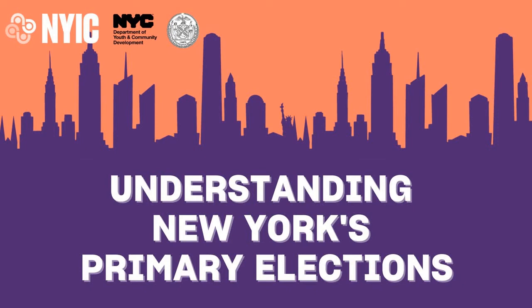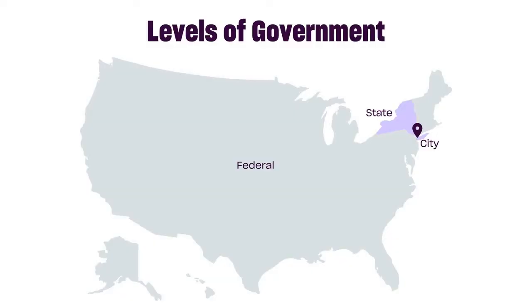In this video, we will learn about primary elections and how they work in New York City. There are three levels of government that we are all a part of: the federal, state, and city. Today, we'll be focusing on the city level of government in New York City.